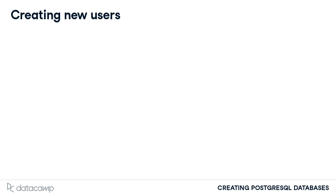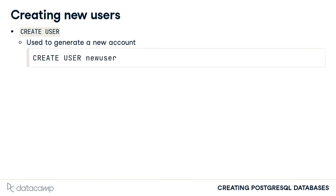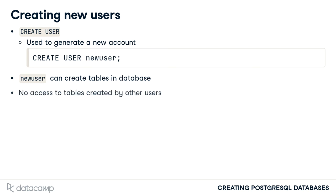PostgreSQL provides a simple command for creating new users using the words CREATE USER. This command initializes a new account for the PostgreSQL database management system. Typing the command CREATE USER new_user followed by a semicolon would result in the creation of a new account with the name new_user. This new user can create tables in the database that is currently in use when the user is created. However, the user has no access to tables created by other users. We will take advantage of this fact to finally control database access in later parts of this chapter.